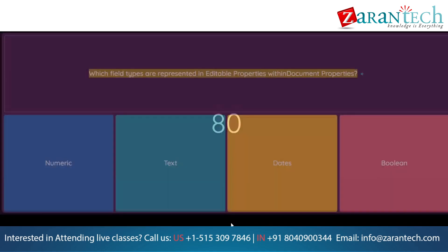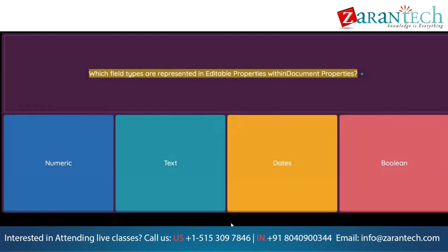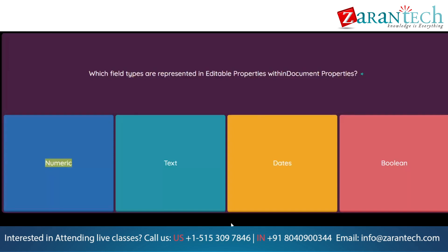Question: Which field types are represented in editable properties within document properties? Option 1: Numeric. Option 2: Text. Option 3: Dates. Option 4: Boolean.